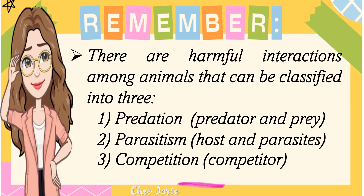To sum up, here are the things you should remember. There are harmful interactions among animals that can be classified into three. First is predation, wherein we have the predator and the prey — the predator is the one who is hunting, and the prey are the ones who will be affected or killed. Number two is parasitism: we have the host and the parasites, where the parasites get nutrients or food from the host and the host will be affected. The last one is competition, where animals are called competitors because they compete for food, shelter, water, space, and so on.